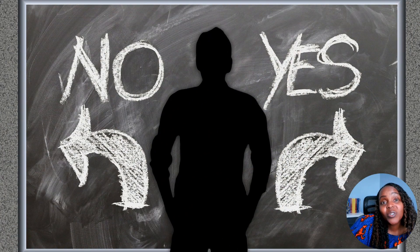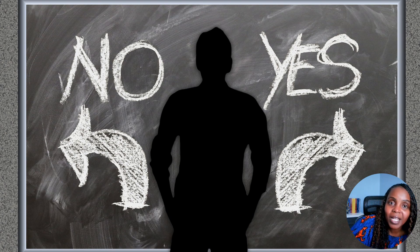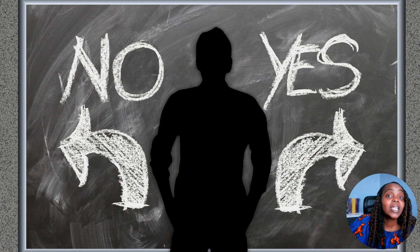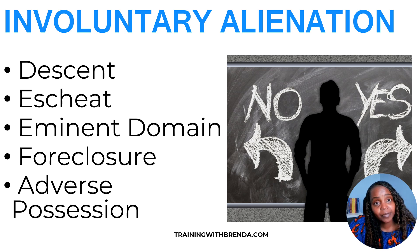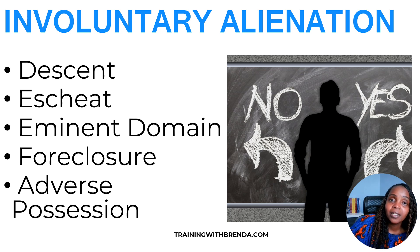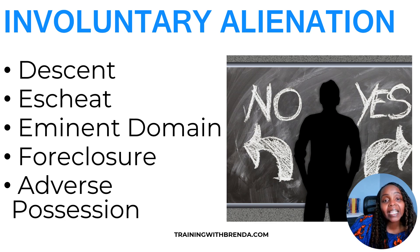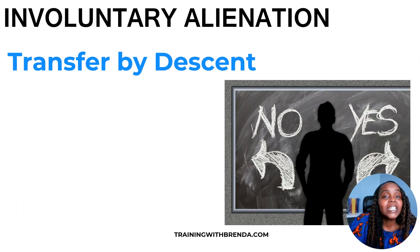Sometimes you don't have a choice in terms of how the property ownership and the rights are going to be transferred. This is when we get to the other side, known as involuntary alienation. A couple of ways this might happen: through descent, escheat, eminent domain, foreclosure, or adverse possession. This again is without your consent or control. Let's go through each one.